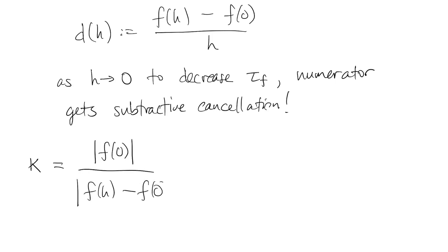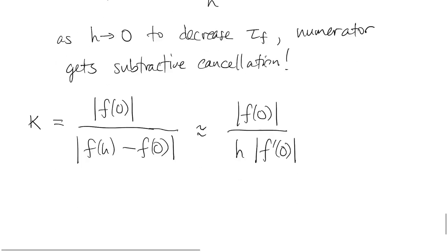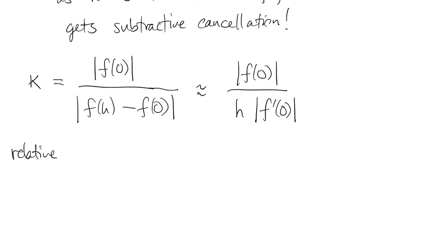We can quantify this effect using the condition number of subtraction. By design, the denominator here is approximately h times f prime of zero. So the relative rounding error in computing d is roughly f zero over f zero prime times one over h times machine epsilon.